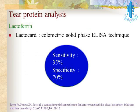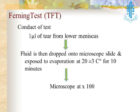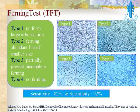Same with lactoferrin — lactocard is available, which can assess it by ELISA technique. Now, there is one test which is more academic-oriented: it's the ferning test. We take one microliter of tear from the lower meniscus and put it onto a slide, and we look for various ferning patterns. If the pattern falls into type 3 and type 4, it goes in favor of dry eye.